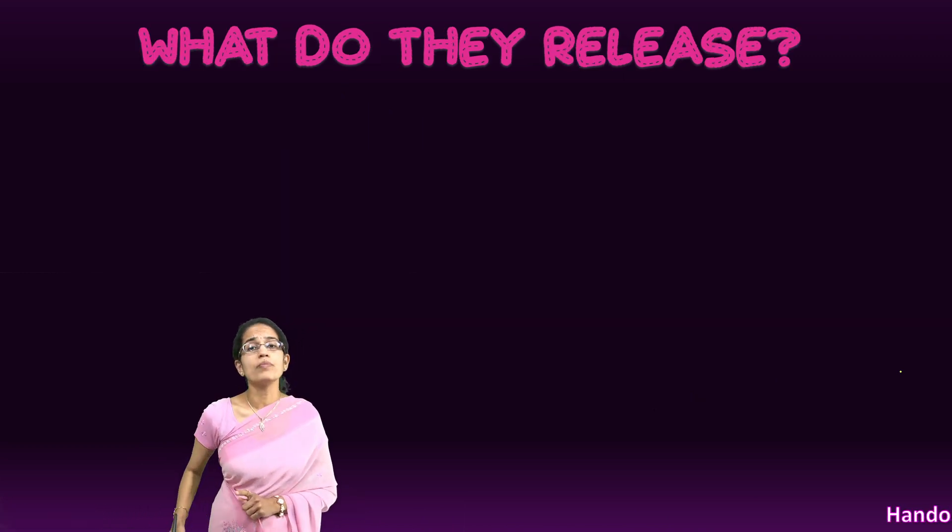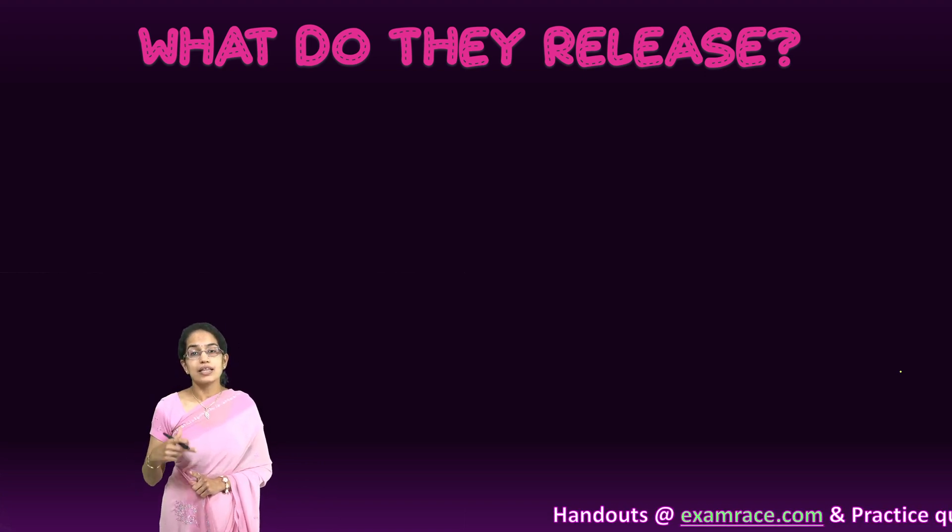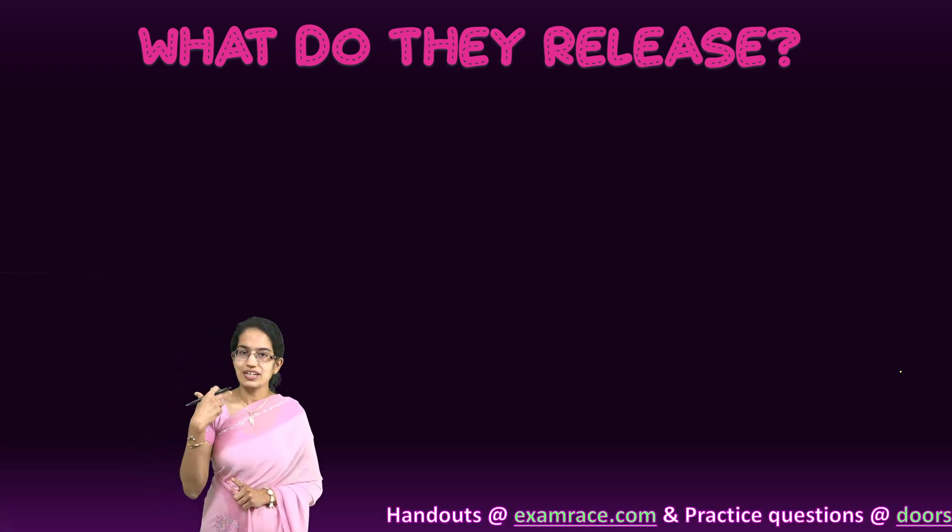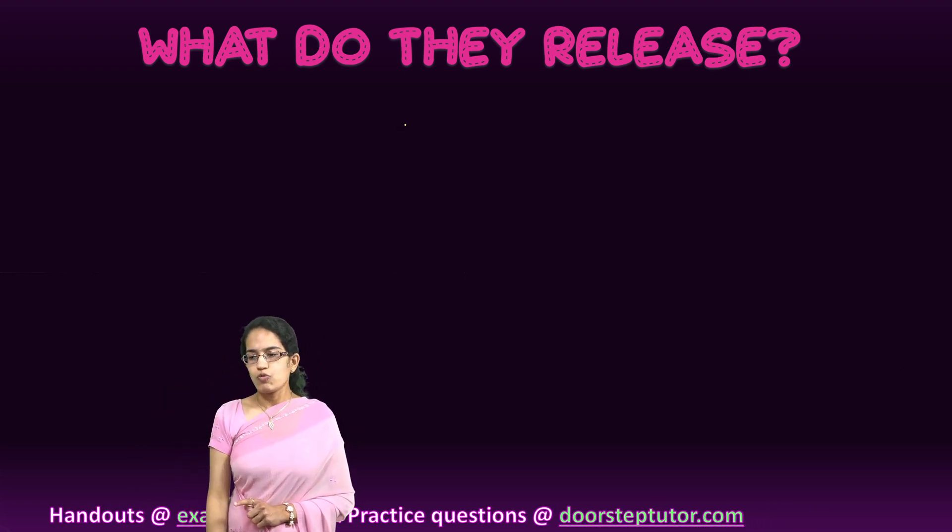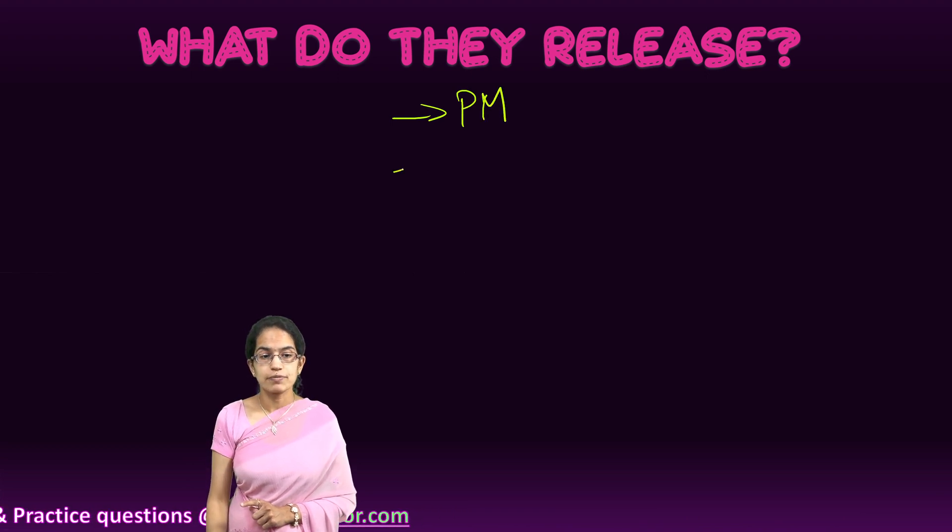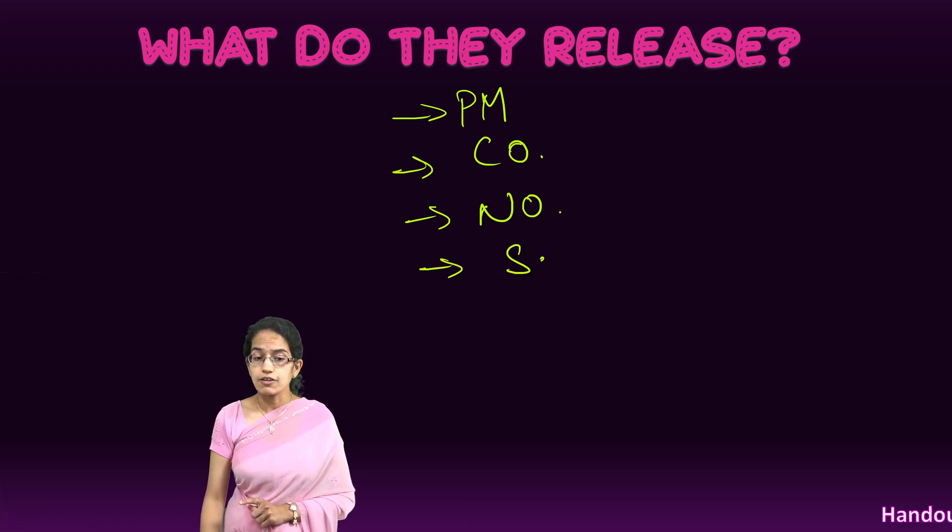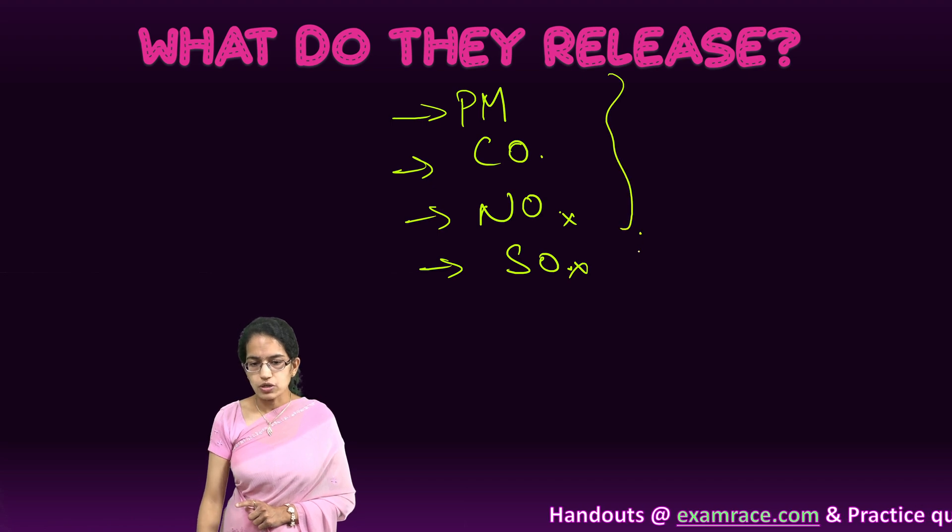Since there are so many sources of BTEX compounds, there is a natural possibility to get released. When they are released into the atmosphere, what kind of things are released? First is particulate matter, there are carbon monoxide emissions, nitrogenous oxides, and sulfur oxides. These are some of the common oxides that are seen.